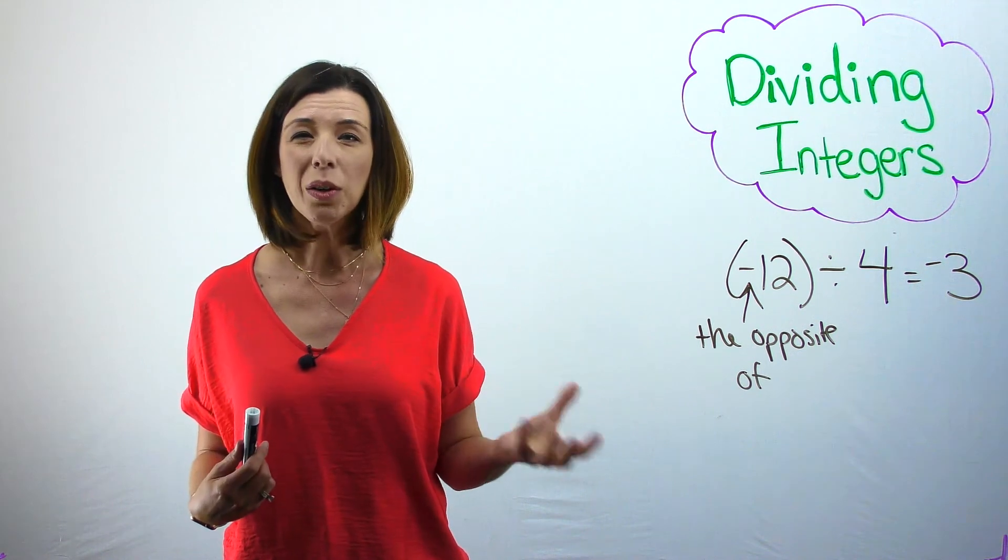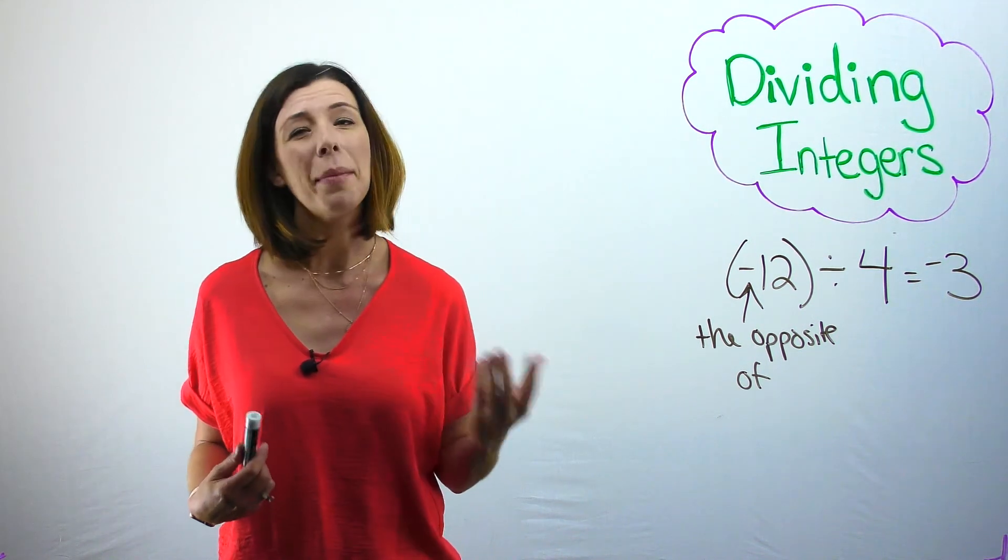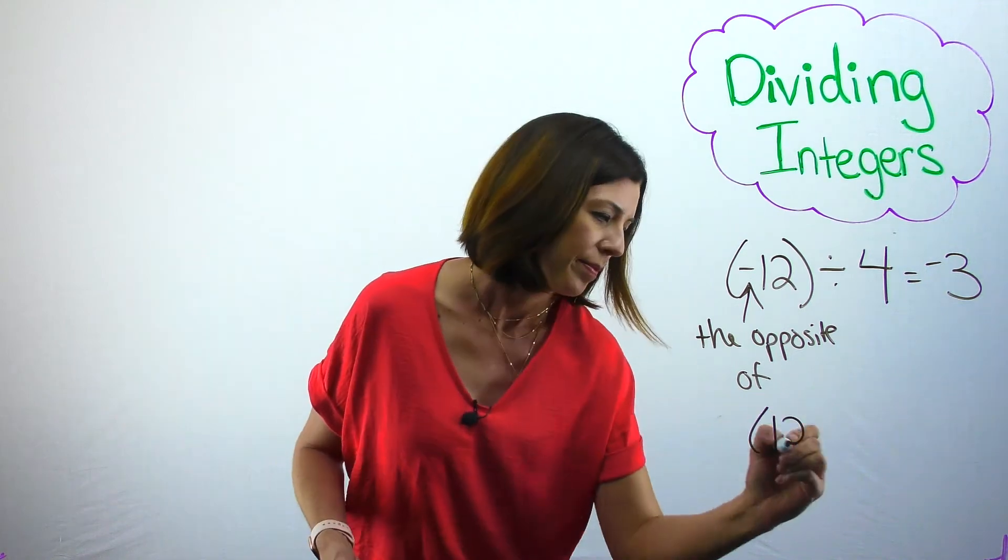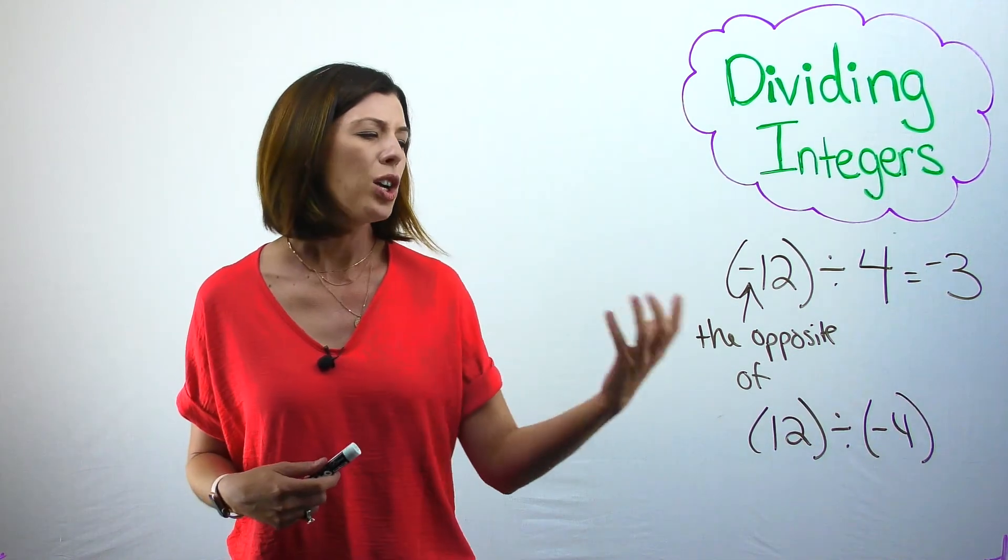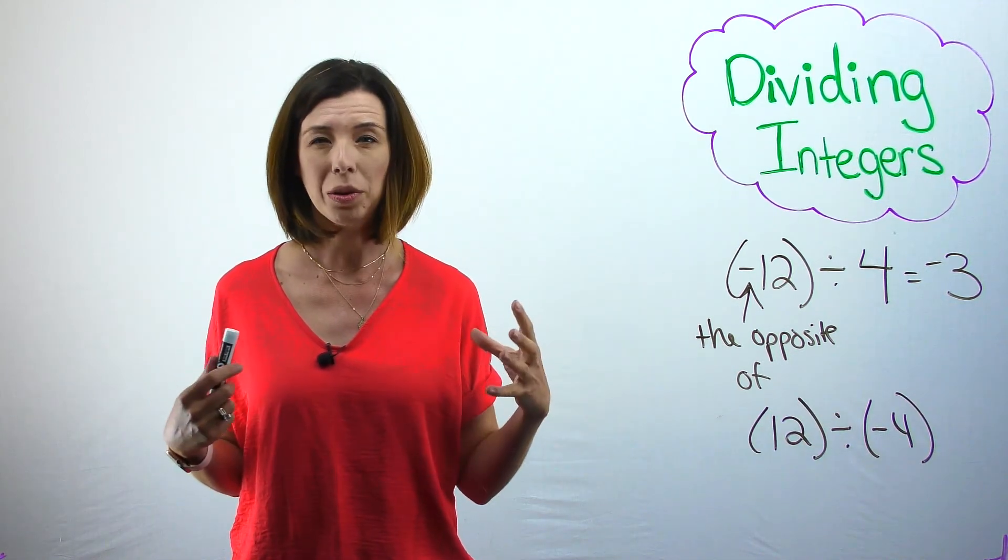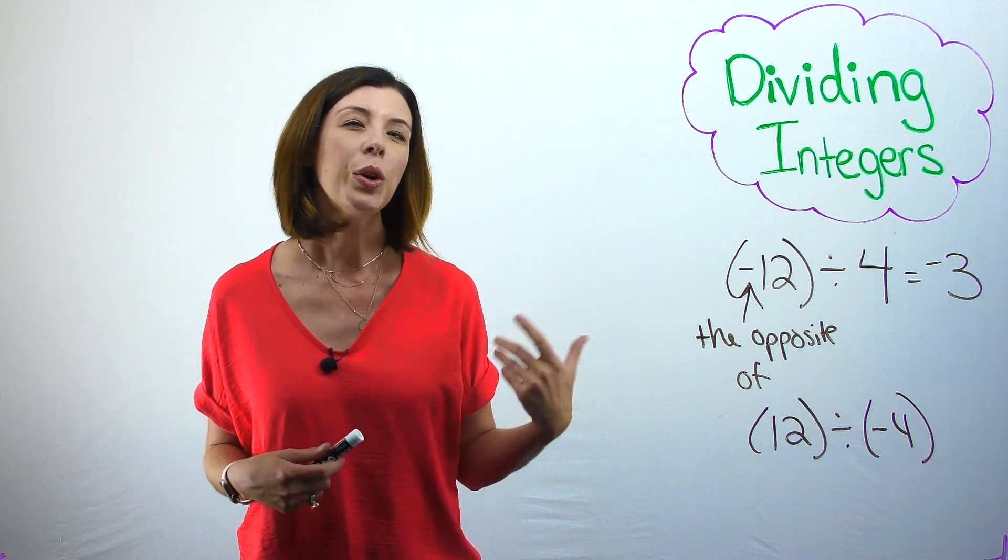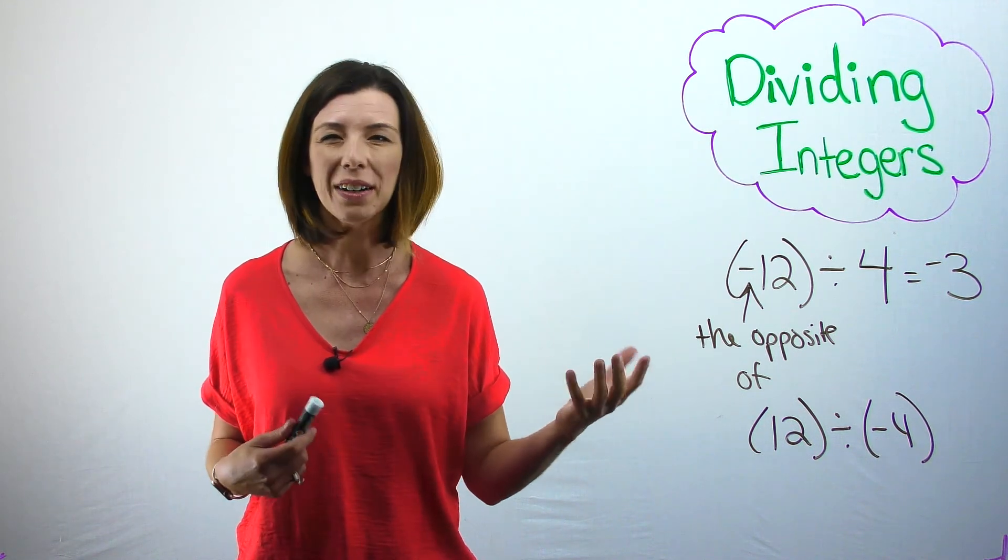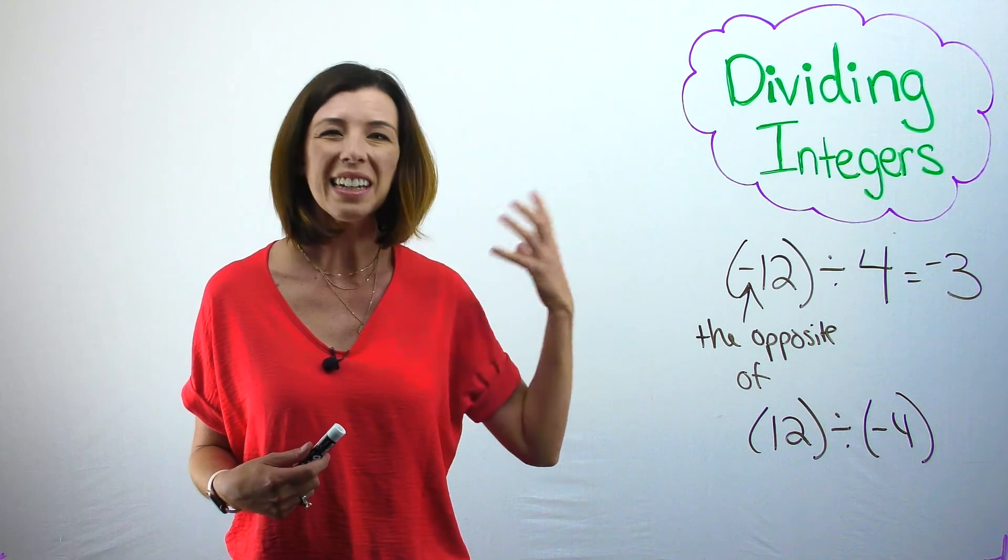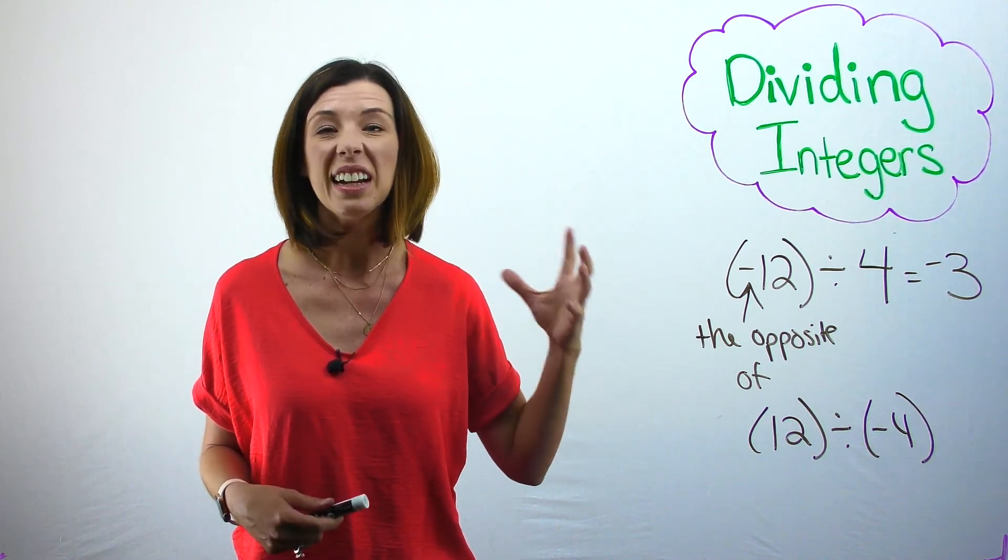It gets a little trickier when my dividend is positive and my divisor is negative. Let's just talk through that one. Now I have 12 positives total. And I need to make them into groups of 4 negatives. You can see how the thinking starts to really get tricky here.